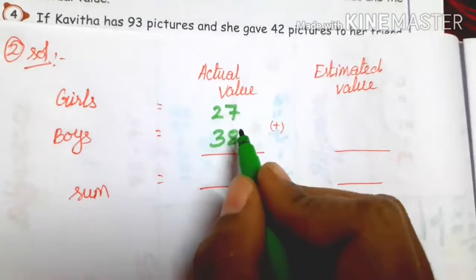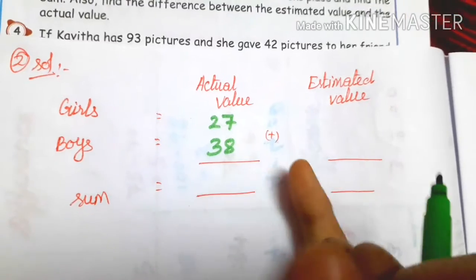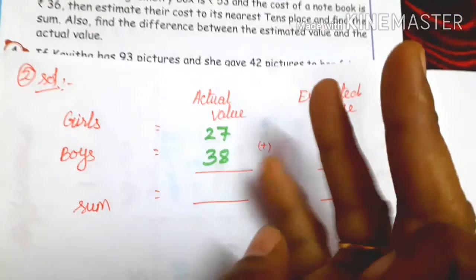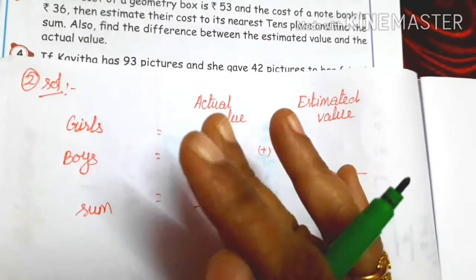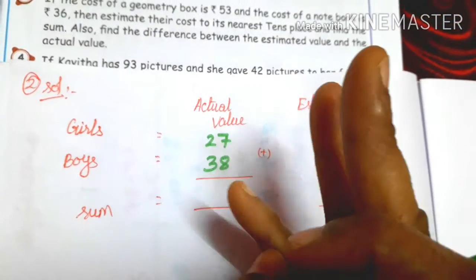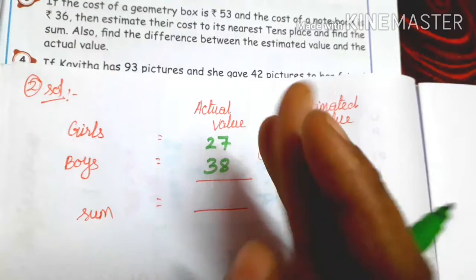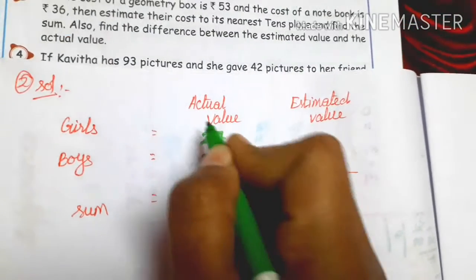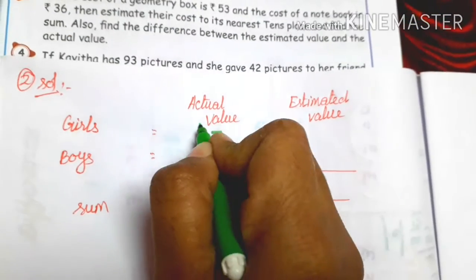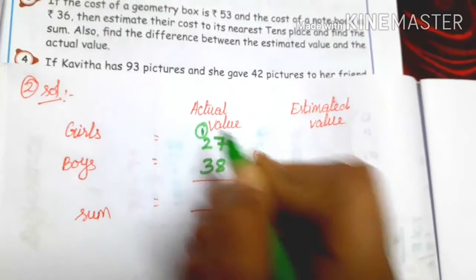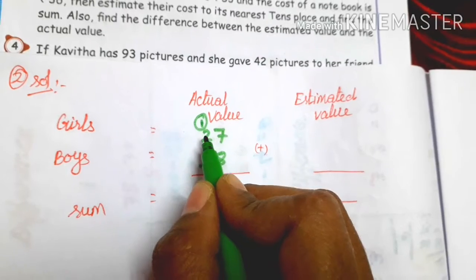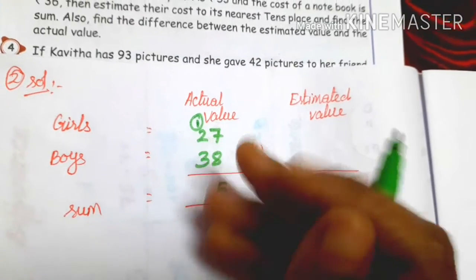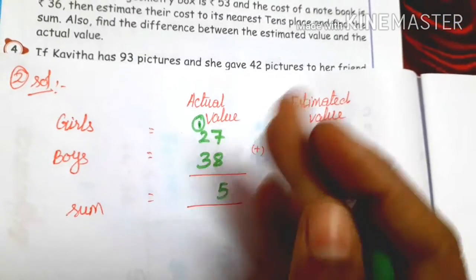If you have to add: ones digits are 7 plus 8. Counting up: 8, 9, 10, 11, 12, 13, 14, 15. So ones place gives 5, carry 1. Then tens: 1, 2, 3, 4, 5, 6. The actual sum is 65.